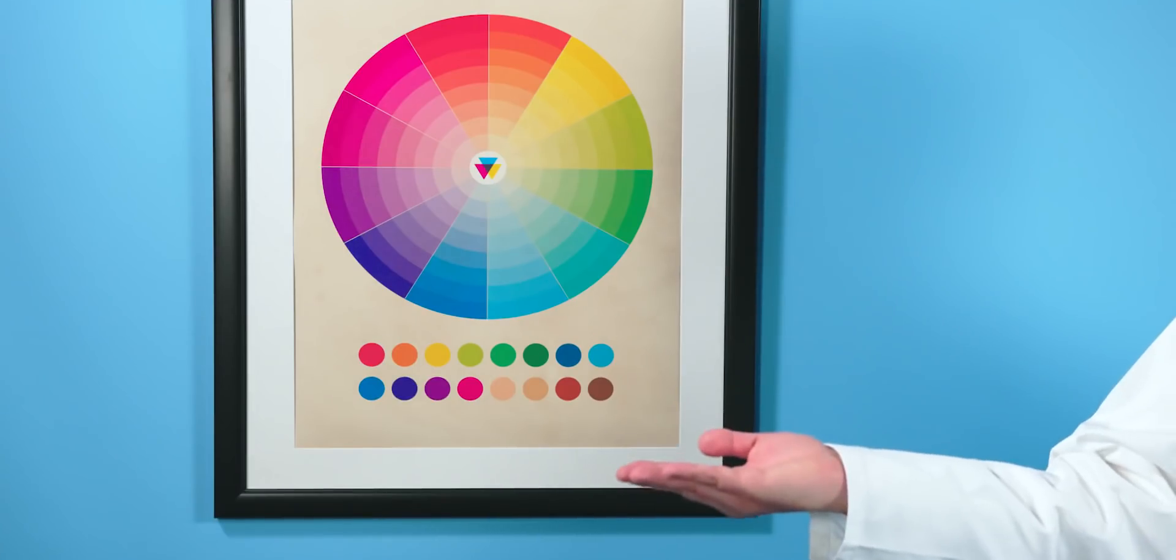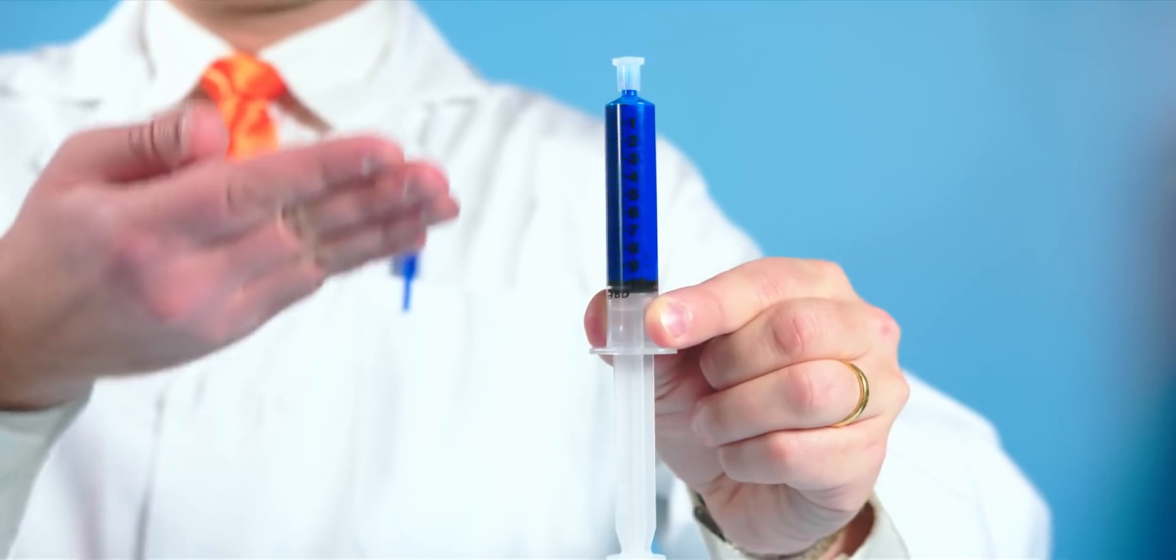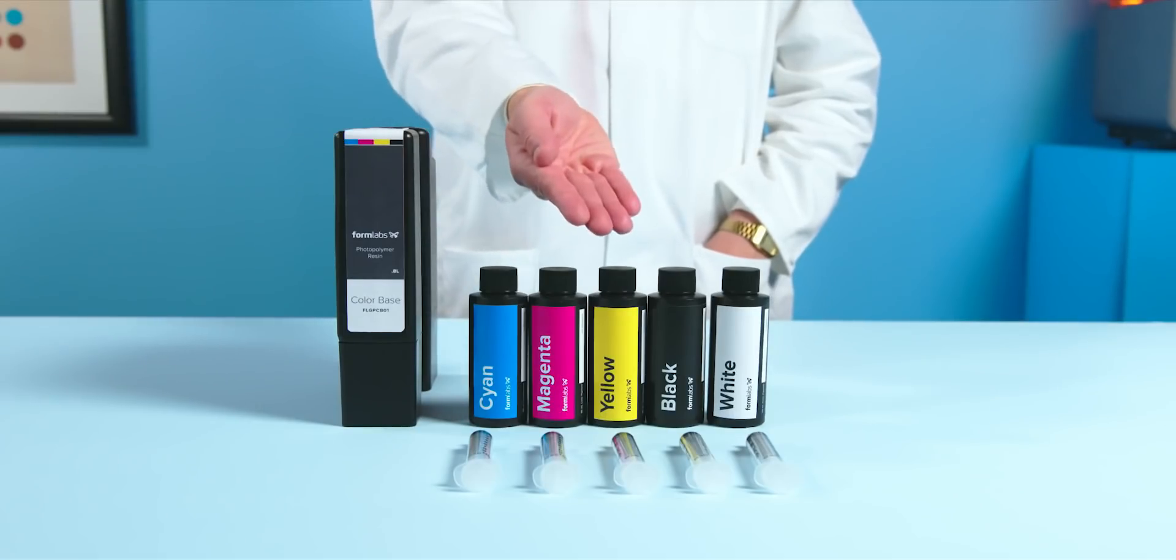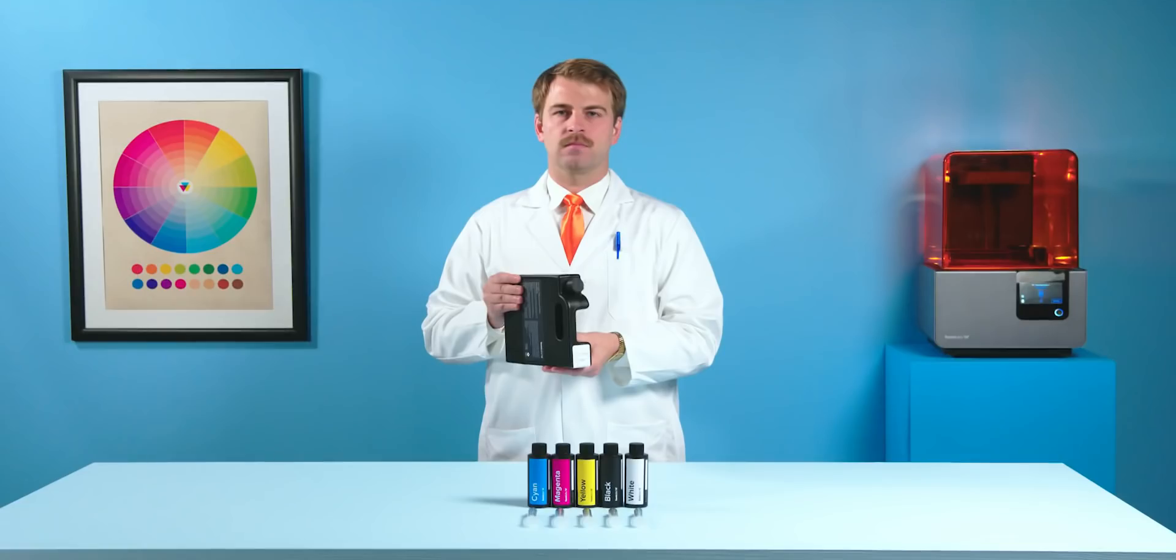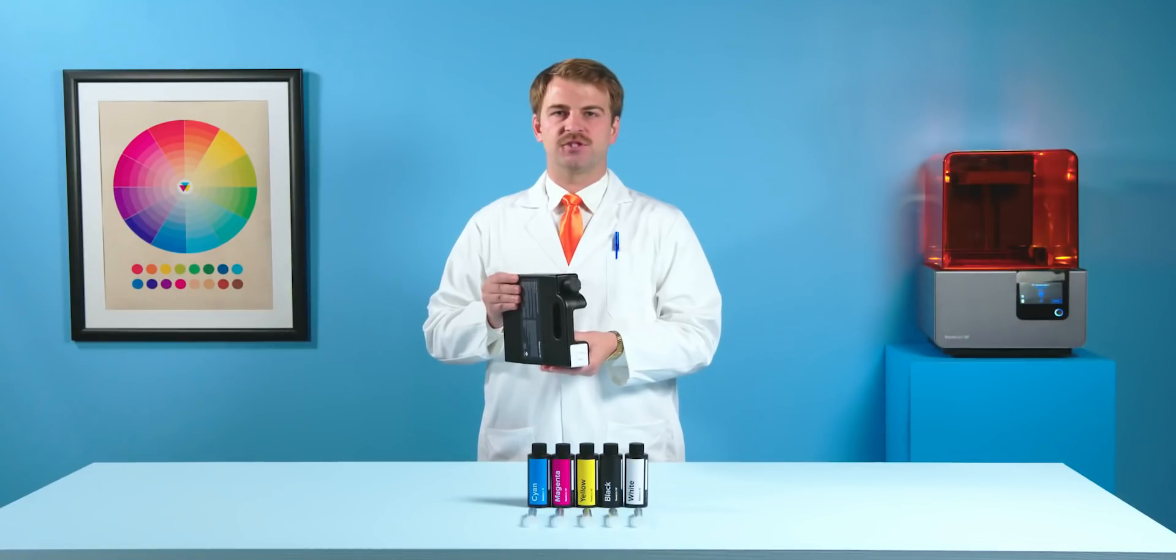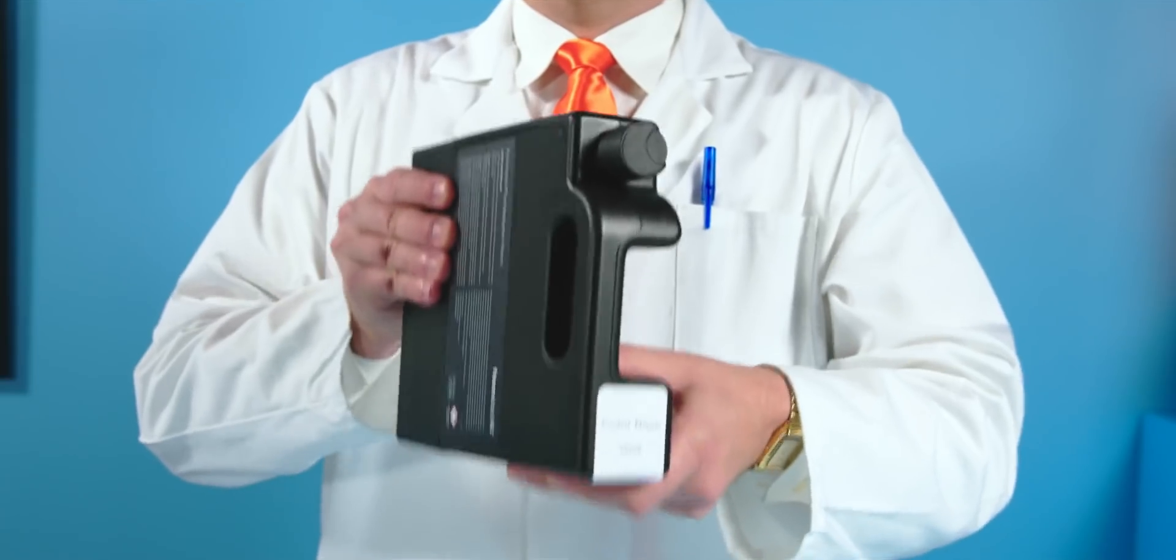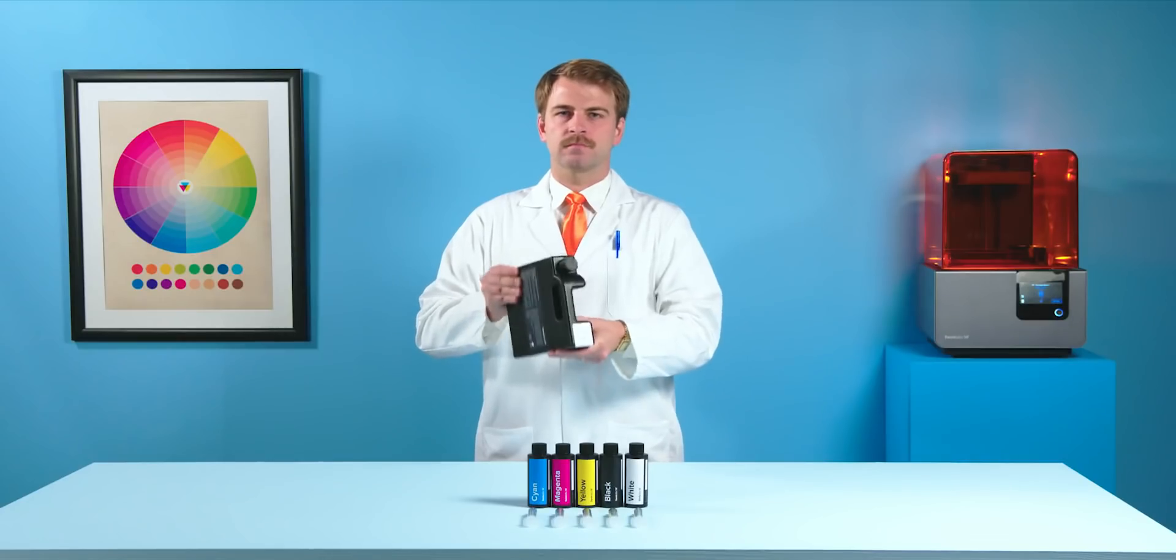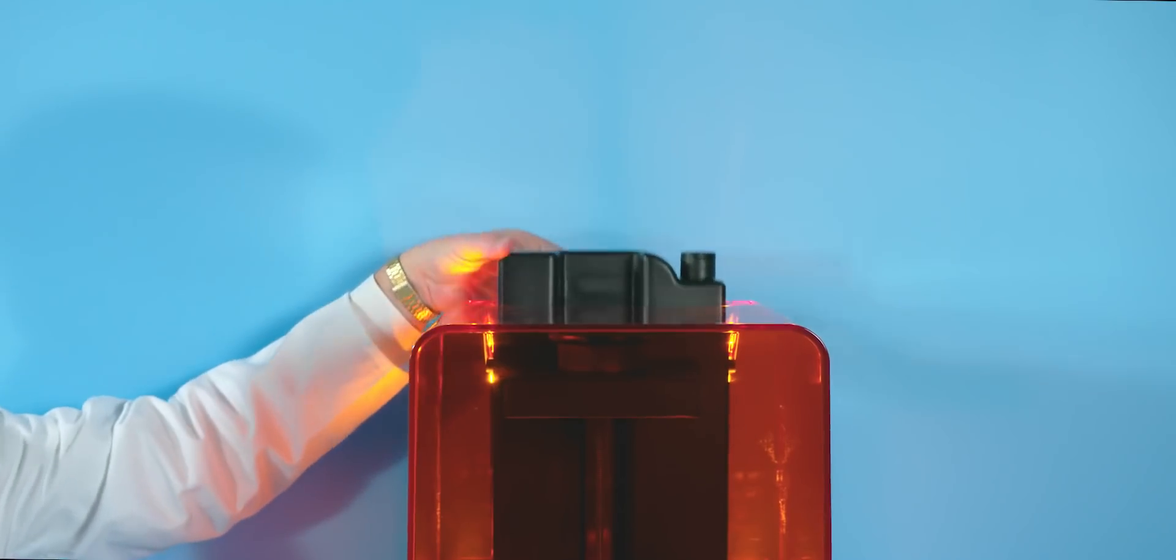First, select your recipe. Measure the pigment using the provided syringe. Add the pigment to the base cartridge. Mix your color resin by shaking the cartridge. Insert the cartridge and print.